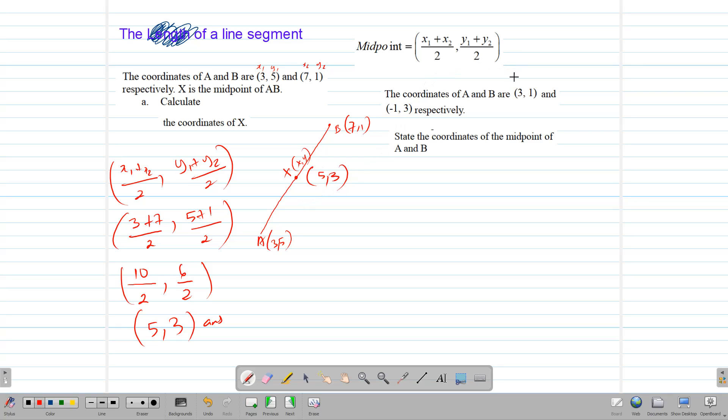Applying the same thing to this example here, we label the points first. x1, y1, x2, y2. And substitute those values into the formula. So we're going to add our x's. Our x's are 3 plus negative 1. And our y values are 1 plus 3. We divide both of those by 2.